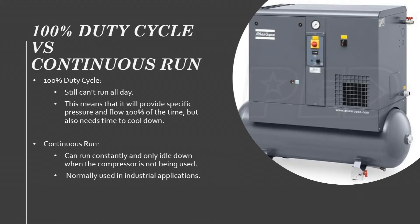Continuous run means you can constantly run the unit, and it will only idle down when the compressor is not being used. This is normally set up in industrial and commercial applications — most commonly with rotary screw units, which are designed to have continuous run.